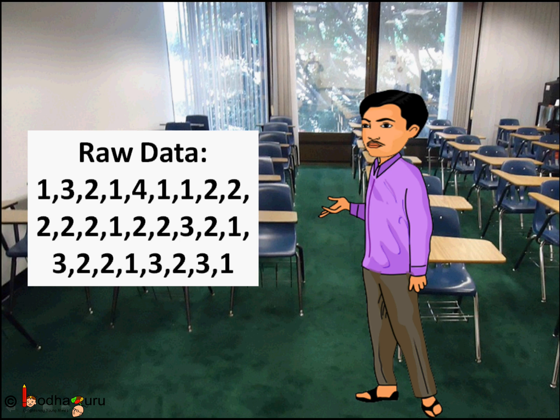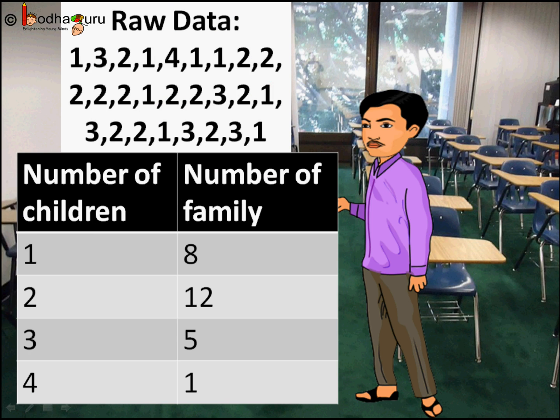The data in this form is called raw data. But what is its use? Now let's look at the frequency of the numbers — that is, how many times a number is appearing in this data. That would tell us how many families have 2 children, how many families have 3 children, and so on. We can see 2 is appearing 12 times, which means 12 families have 2 children each.